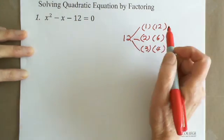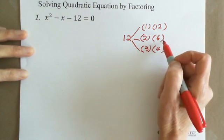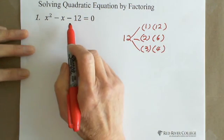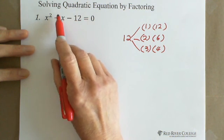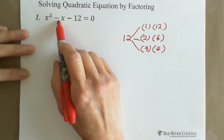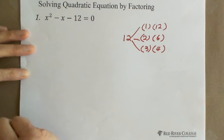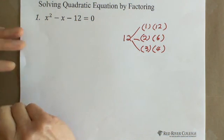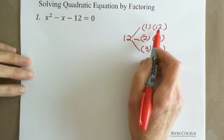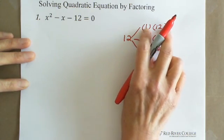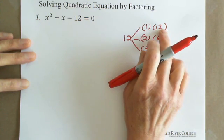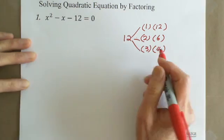So 12 can be factored as 1 times 12, 2 times 6, or 3 times 4. The middle term is negative x, which means the coefficient of x is negative 1. That means these two numbers add together equal negative 1, so these two numbers are very close. Obviously it's not 1 and 12, because negative 12 plus 1 gives negative 11, not negative 1.